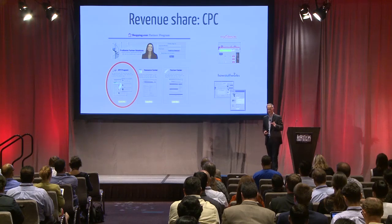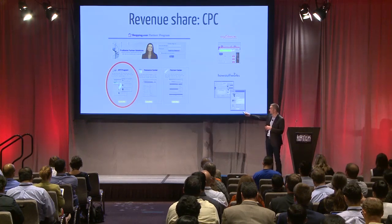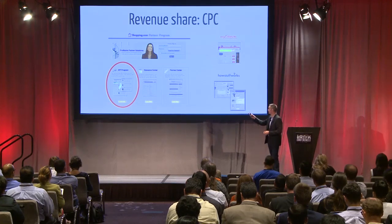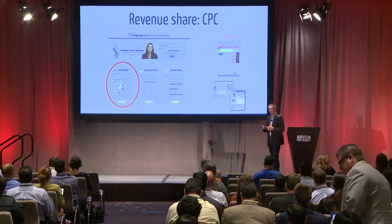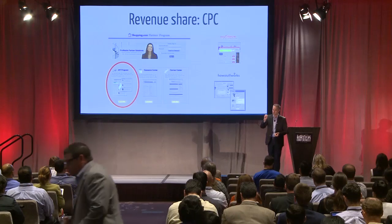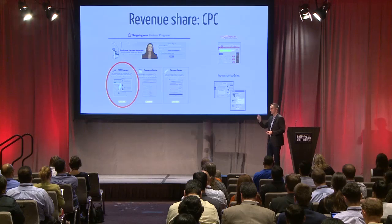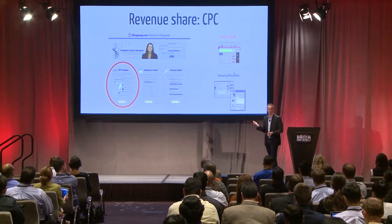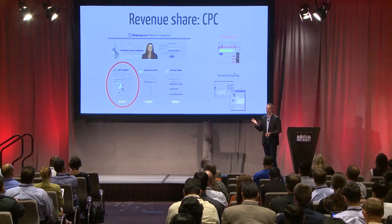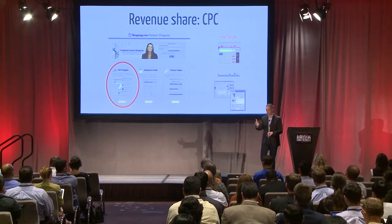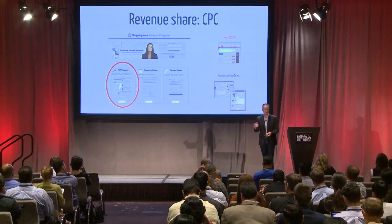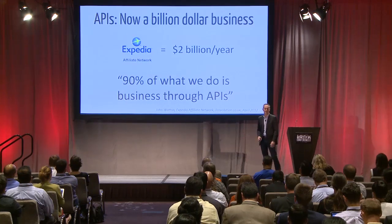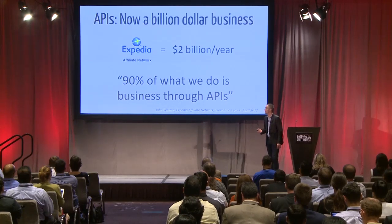CPC — cost per click — is another variant. Here's Shopping.com with their partner program, which includes an API program. With CPC, if somebody clicks from your site or app built using this API, you get some fraction of a penny every time they click through to the destination site. Almost every shopping app you use on your phone — the barcode scanner ones for product comparison — a big part of how those apps and websites make money is using these APIs and getting that click-through revenue.